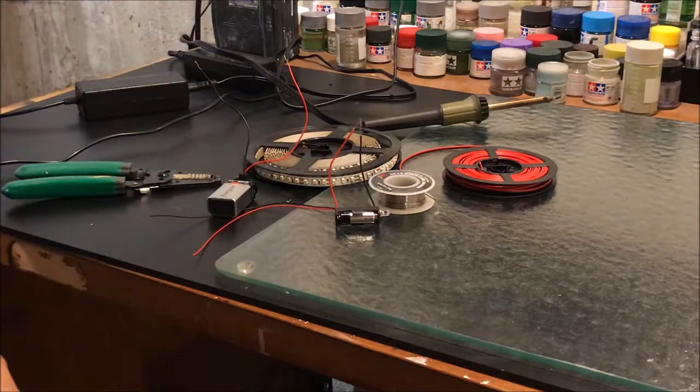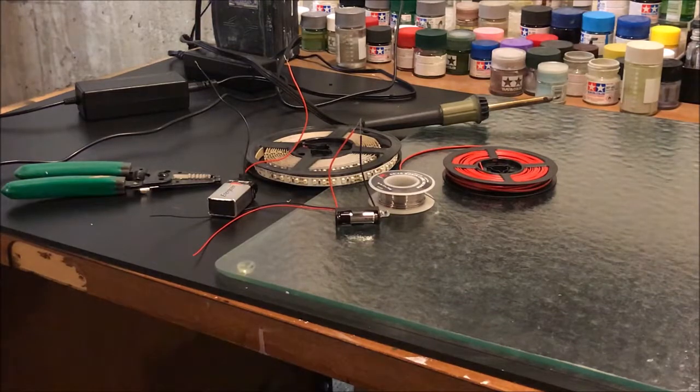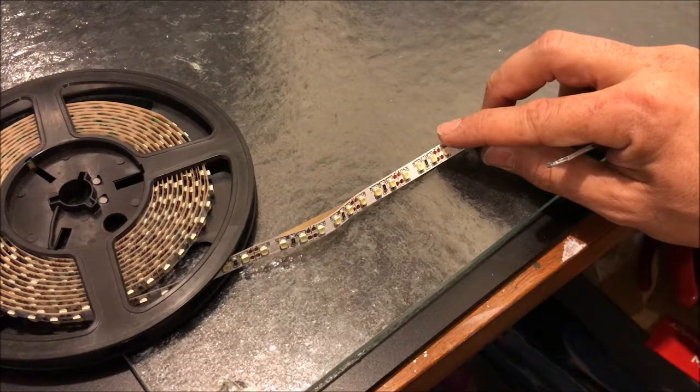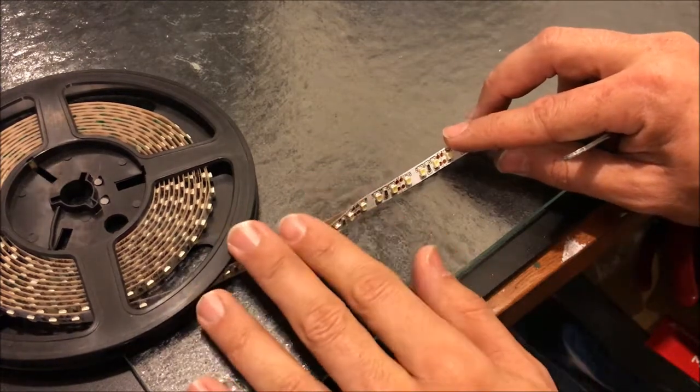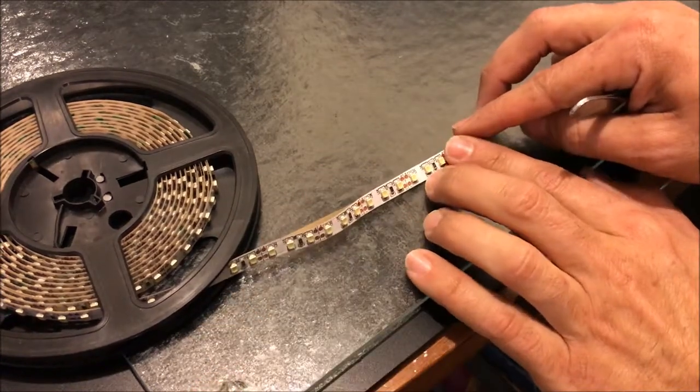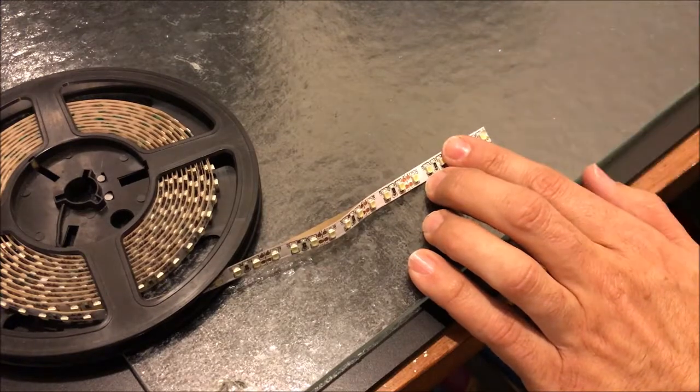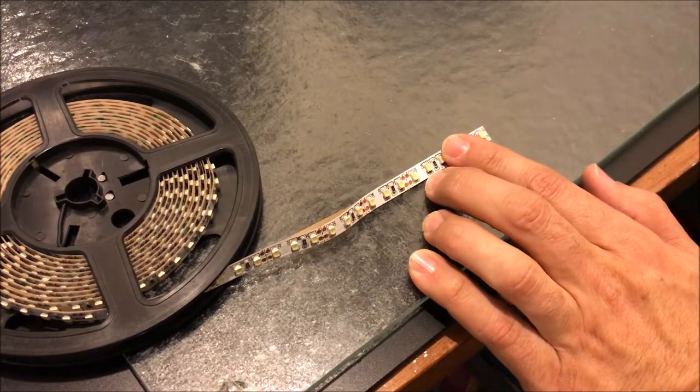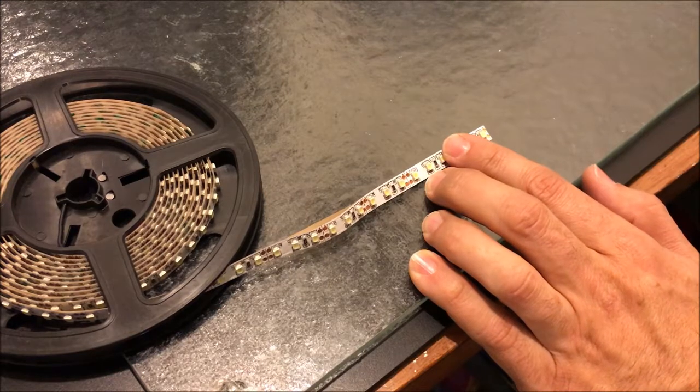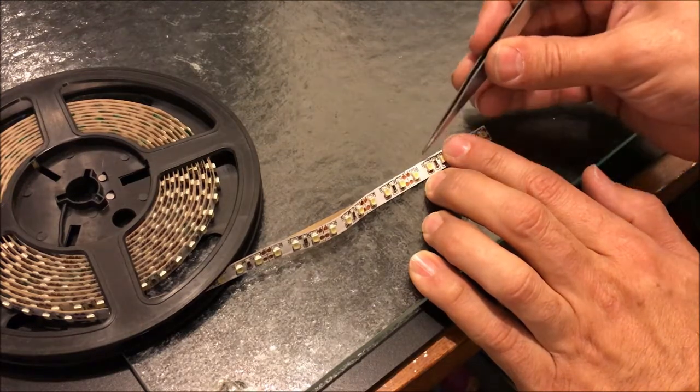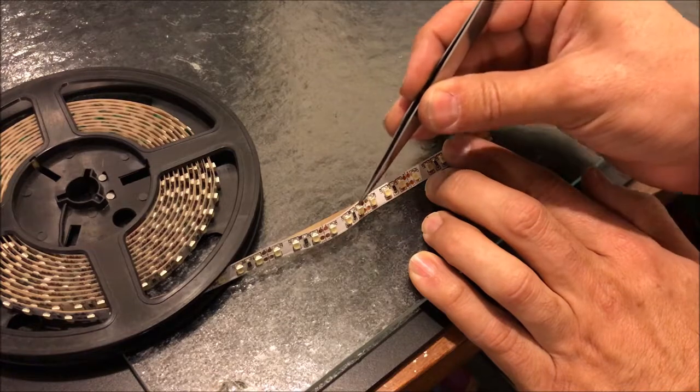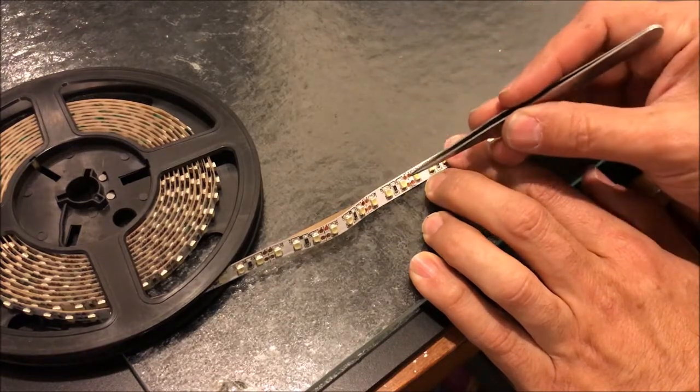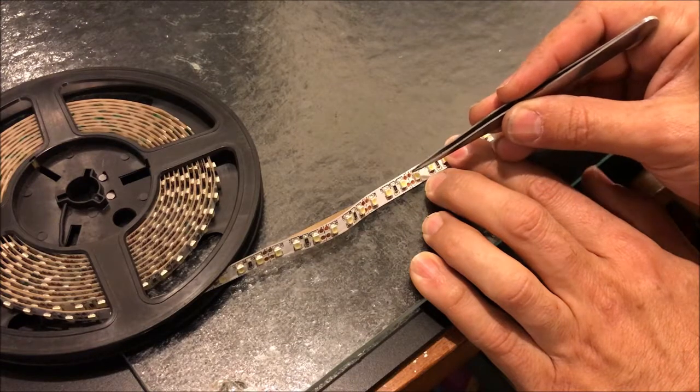All right guys, so this is LED tape. The tape I have here is cool white. You can get it in warm white or cool white. I like the cool white—it leans a little blue more than leaning towards orange. These yellow squares, those are your LEDs on this LED tape.